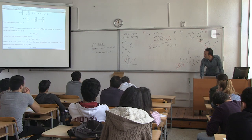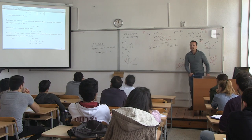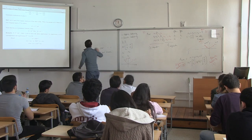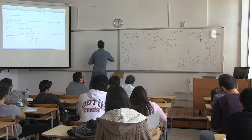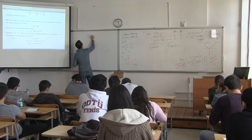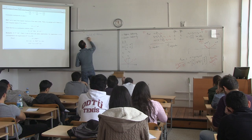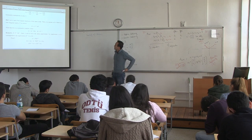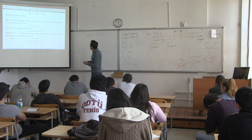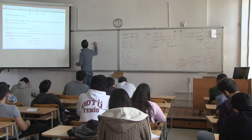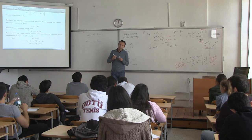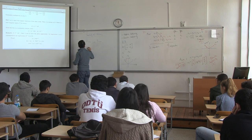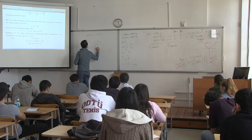The next topic is matrix similarity. Matrices can be similar to each other. Given A and B as square matrices of the same order, A is similar to B if there exists a non-singular matrix P for which B equals P-inverse times A times P.